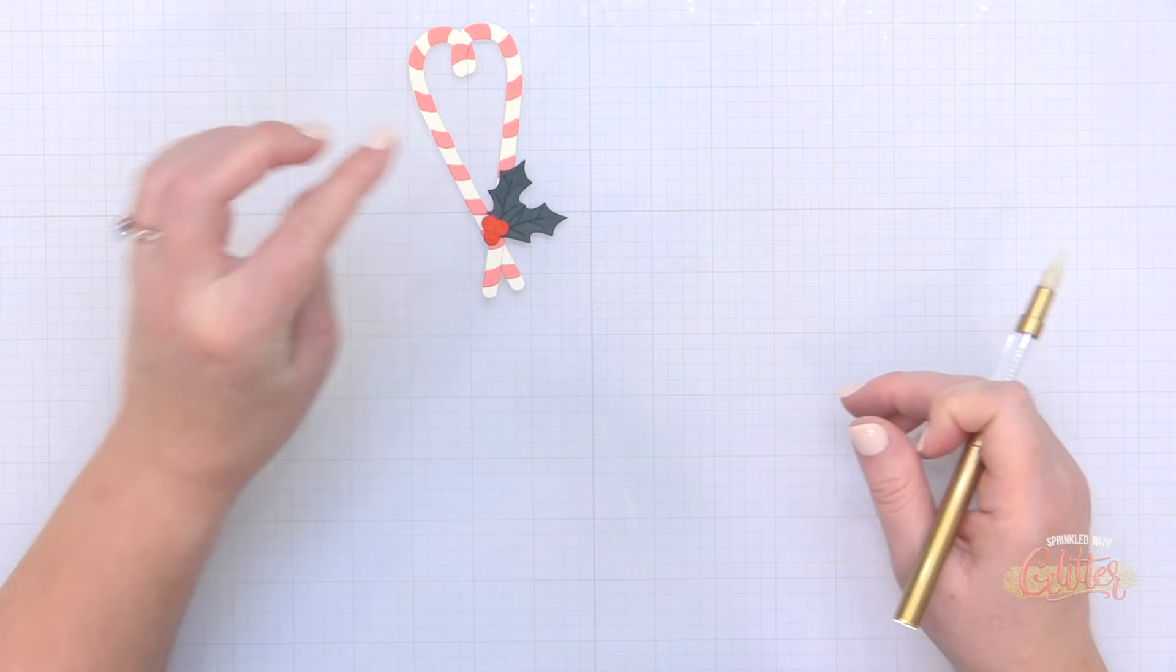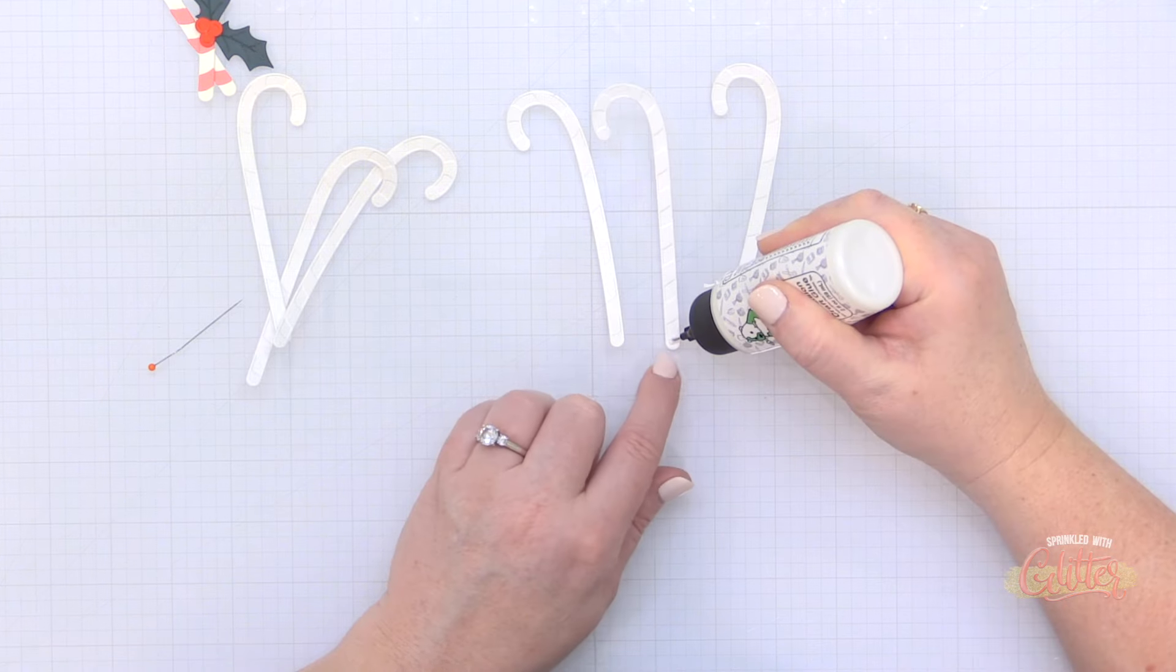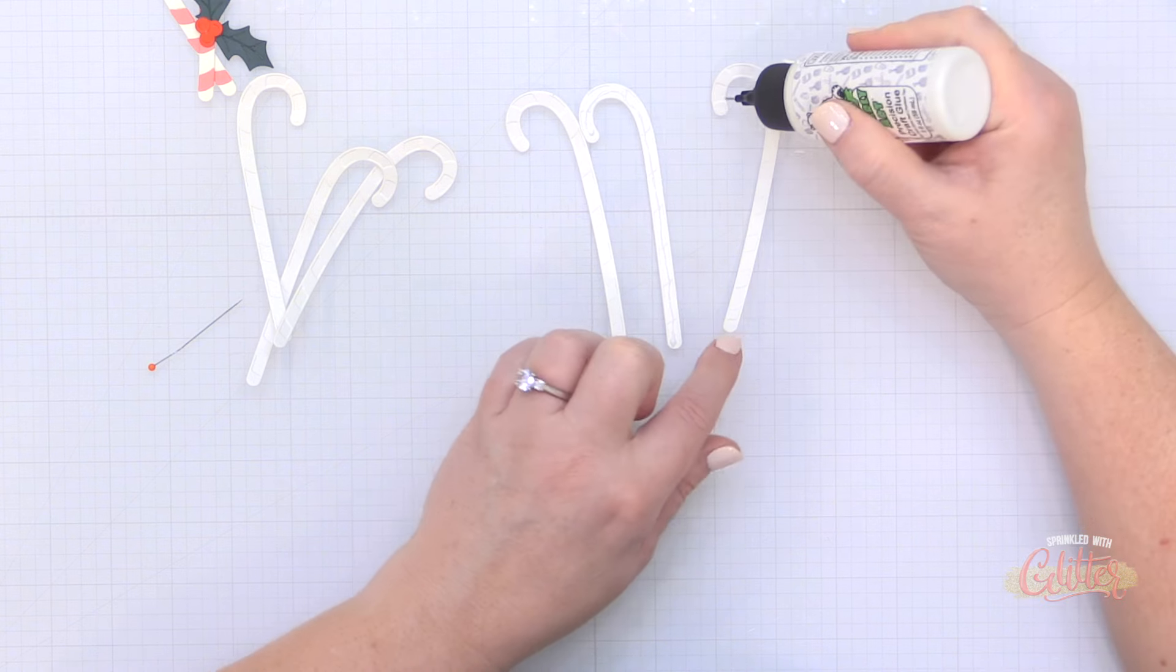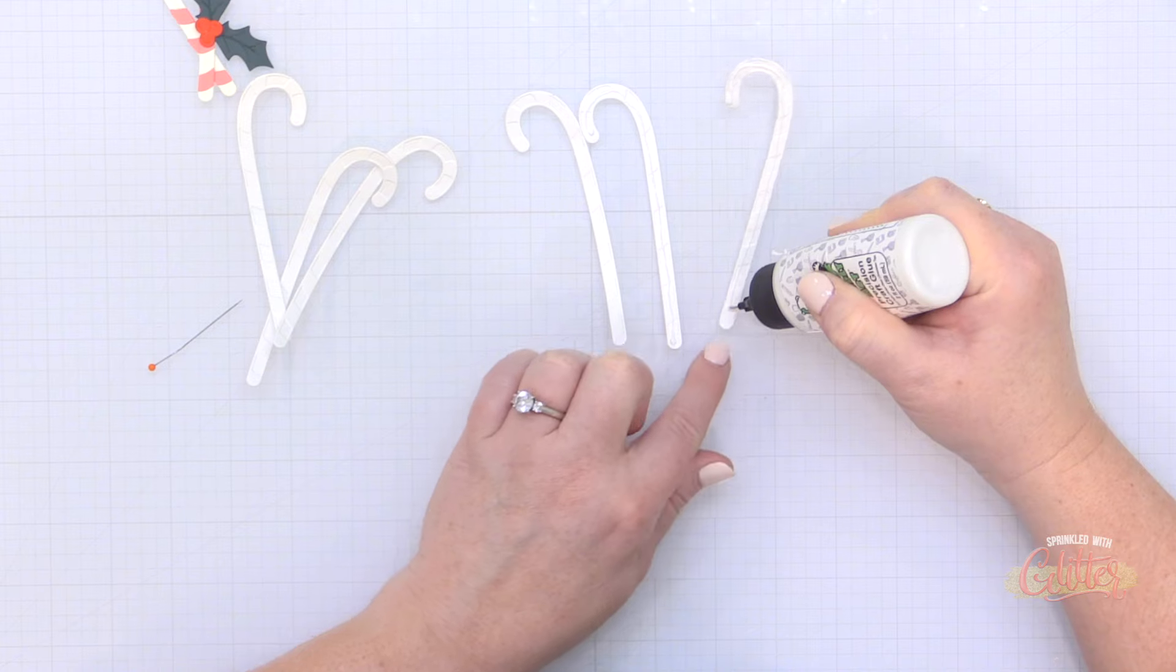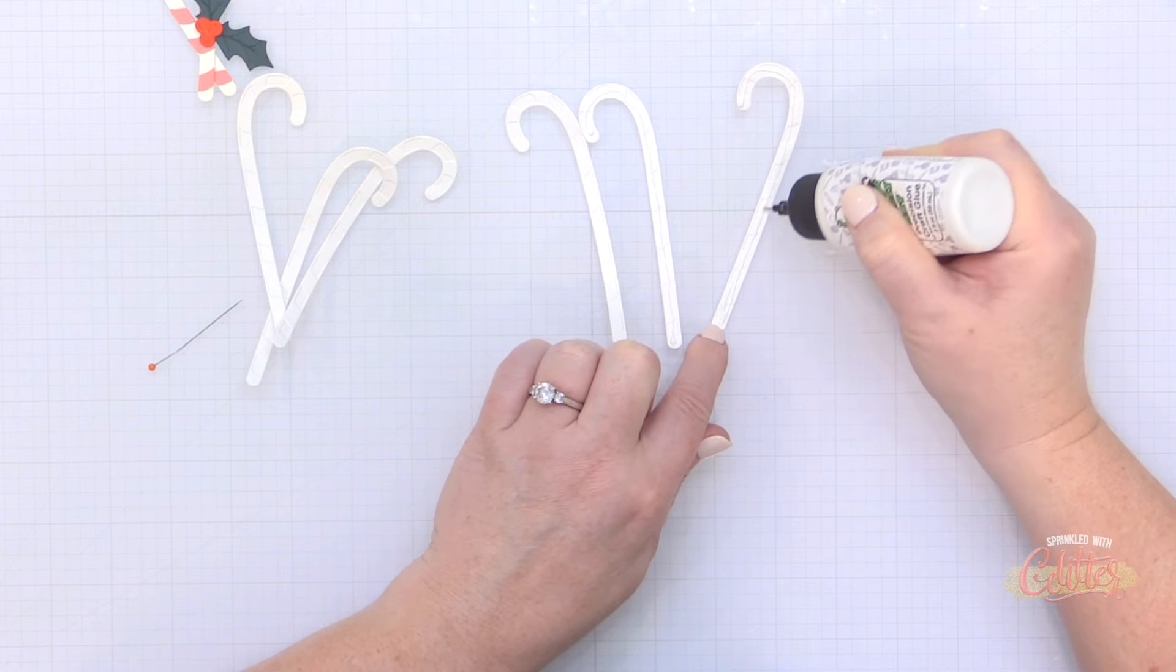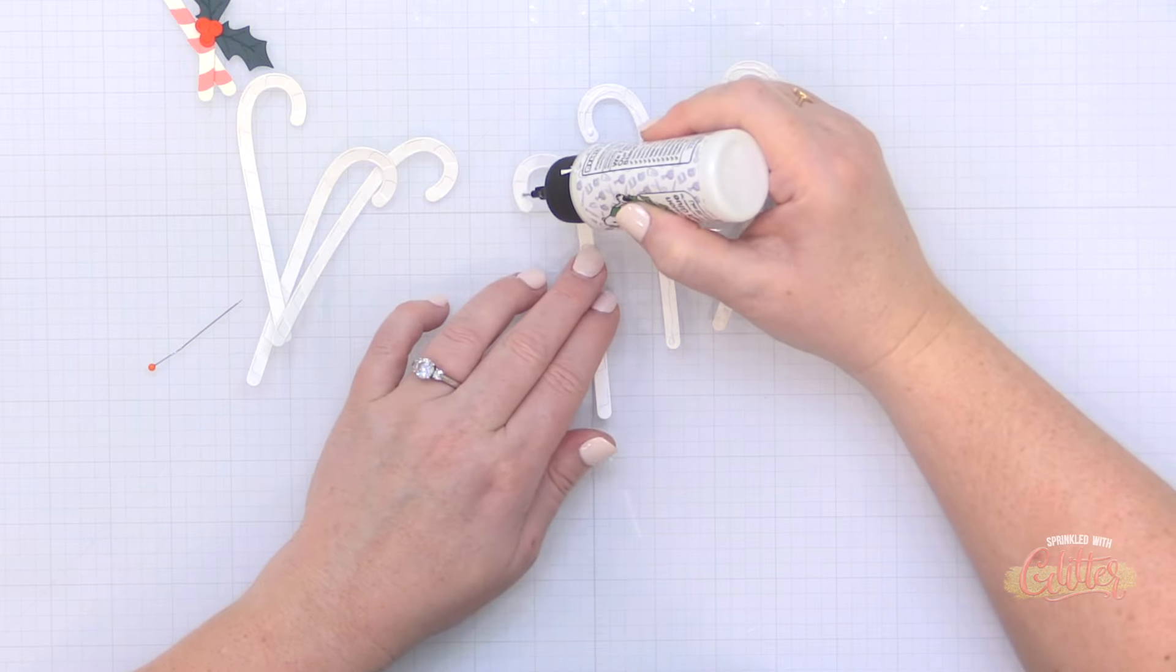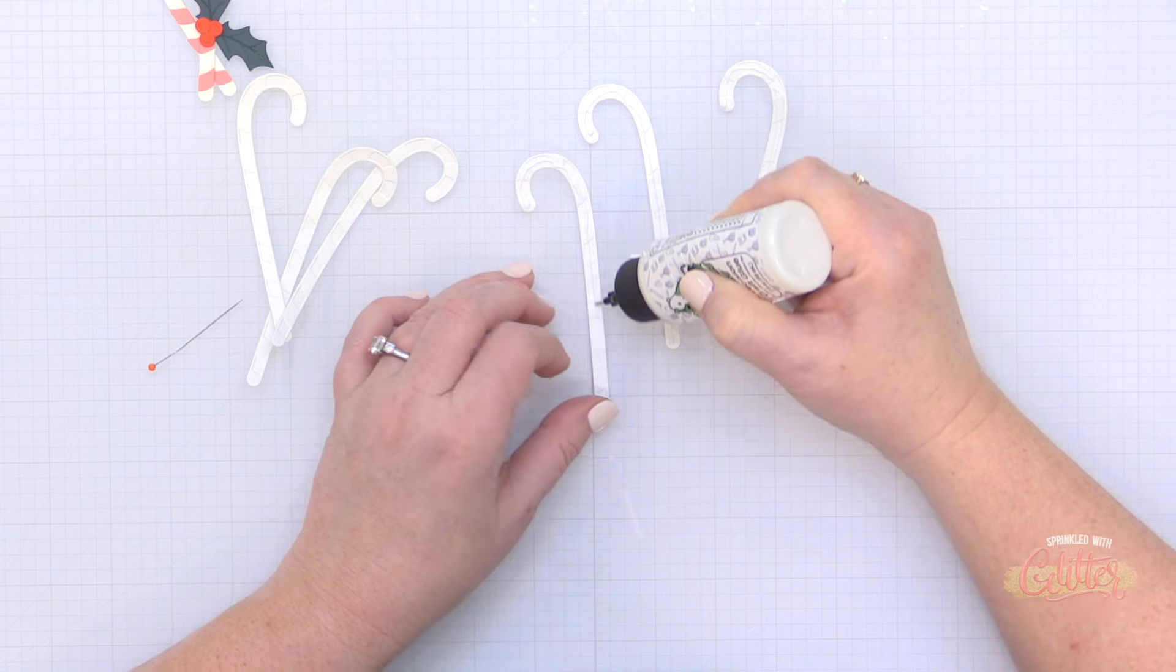So I'm going to adhere those together and then I will adhere my holly leaves together here in just a bit. But as I mentioned before I went ahead and die cut the candy cane base three times from some plain white cardstock. I'm adding liquid glue on the top of those and I'm going to stack those up behind my assembled candy canes. This is going to give these candy canes a little bit of weight, a little bit of heft and a little bit of dimension on the card.